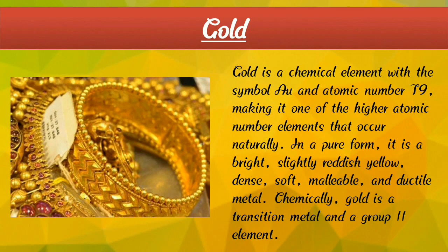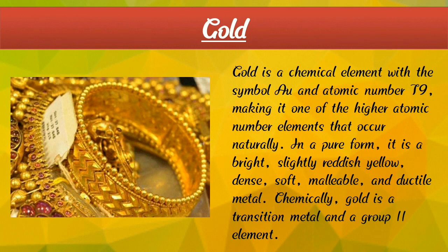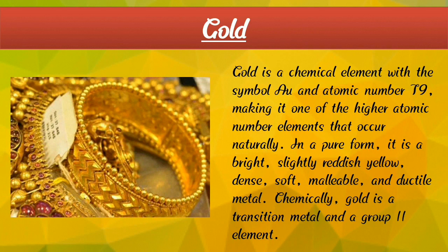Gold — G-O-L-D. Here we can see a photograph of gold. Gold is a chemical element with the symbol Au and the atomic number 79, making it one of the higher atomic number elements that occur naturally in pure form. It is a bright, slightly reddish-yellow, dense, soft metal. Chemically, gold is a transition metal and a group 11 element.